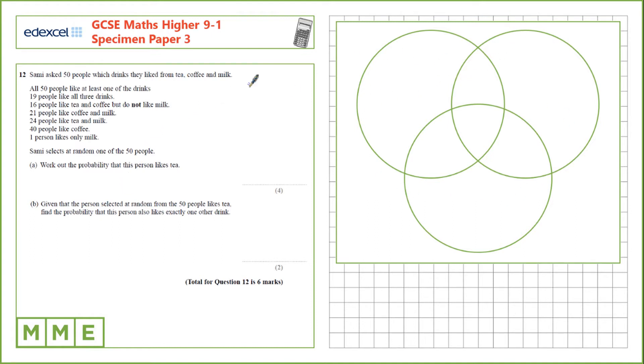First we need to draw out the Venn diagram to hold this information. We have three drinks: tea, coffee and milk, so we'll put them here. We know that all people like at least one of the drinks, so there's going to be no one outside of the Venn diagram.